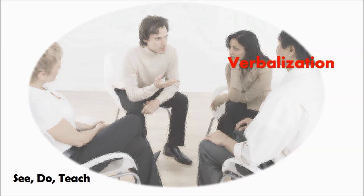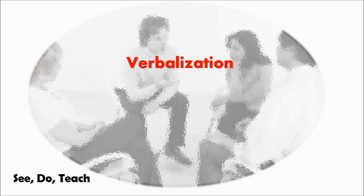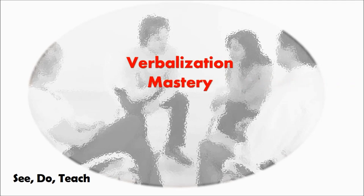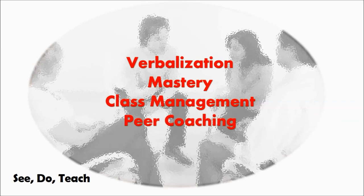When students teach each other, it accomplishes several things. Verbalization — it allows the student to verbalize what they just learned, thus reinforcing the concept. Mastery — if you can't teach someone else how to do something, do you really know how to do it? Class management — sometimes the teacher doesn't have time to check that each student has mastered every skill or concept, so an extra set of eyes helps ensure each student is successful. Peer coaching — a fellow student may be able to explain concepts in a way that best fits another's learning style.